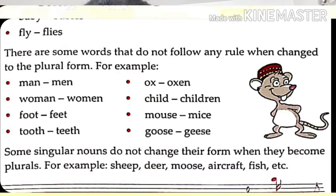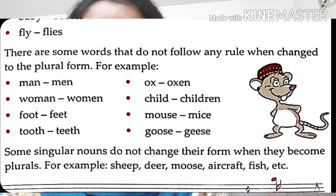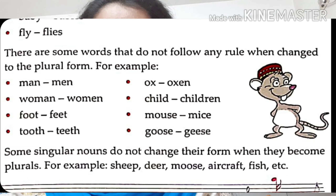There are few exceptions to this rule. Few of the words do not follow any rule when changed into plural forms. For example: man becomes men, woman becomes women, foot becomes feet, tooth becomes teeth, ox becomes oxen, child becomes children, mouse becomes mice, goose becomes geese.